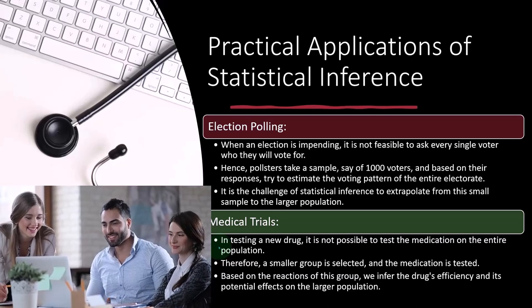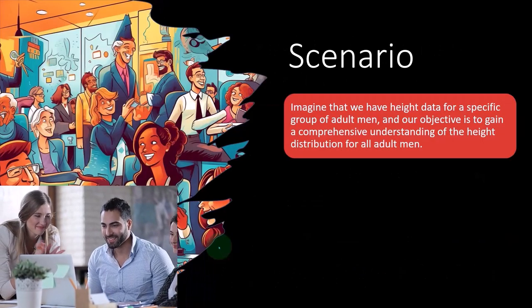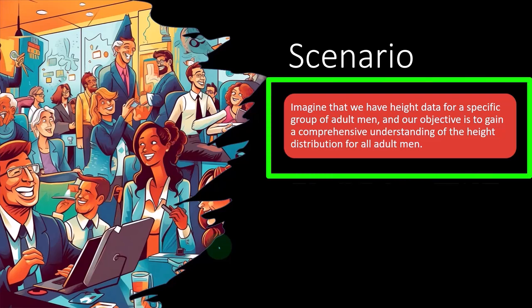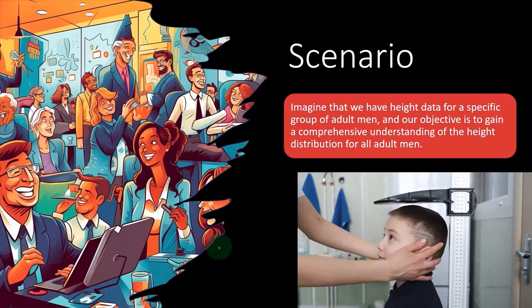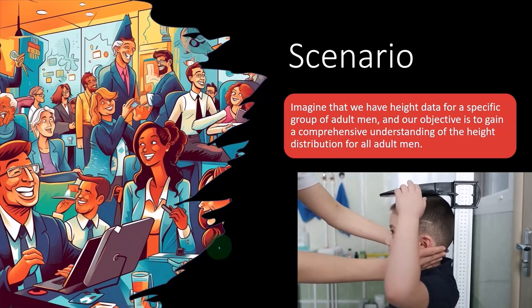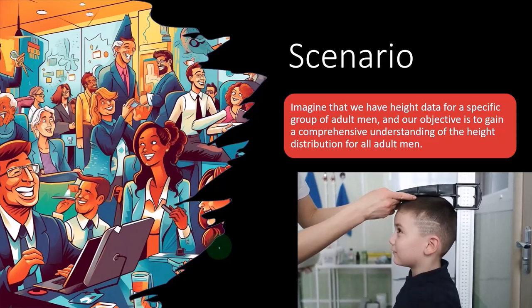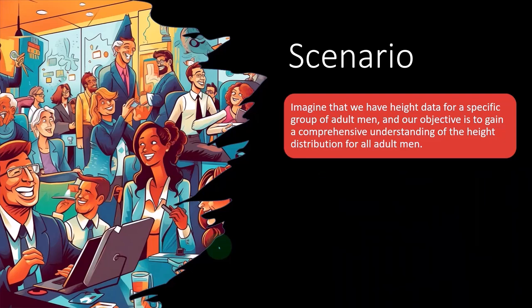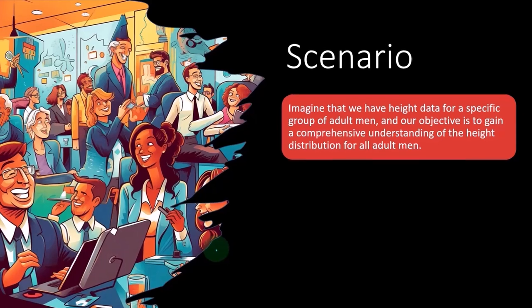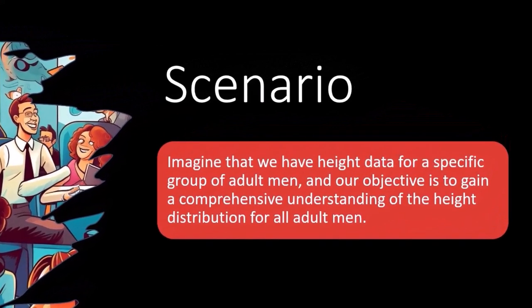Let's look at a scenario: imagine we have height data for a specific group of adult men, and our objective is to gain a comprehensive understanding of the height distribution for all adult men. Height is a good example to use when first exploring inference analysis, because heights normally come to something like a bell-shaped distribution — most men tend toward a middle point, with most people being somewhere around an average height.